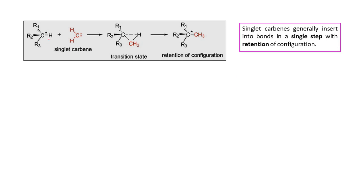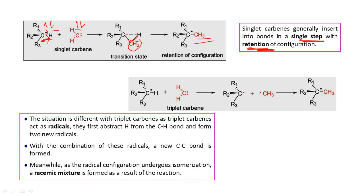In this example we have a chiral center C*. When we use singlet carbene, insertion generally occurs in a single step with retention of configuration — meaning if the chiral center is R, it will remain R; if it is S, it will remain S. In singlet carbene, the two electrons are in opposite directions, and when the C-H bond is broken, the electrons can match with each other. In a single step, the C-H bond is broken and the newly generated C-C bond and C-H bond are formed, giving retention of configuration.